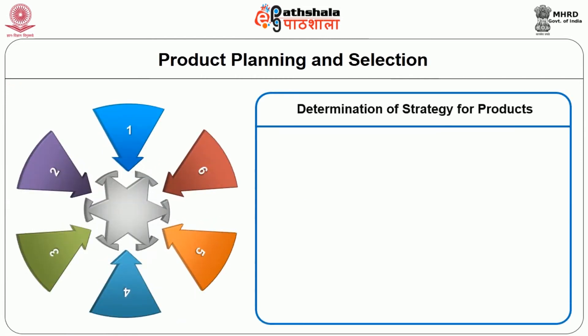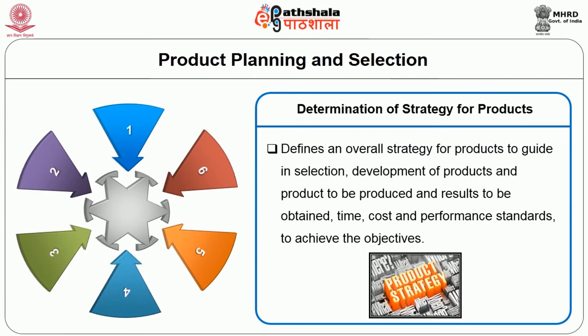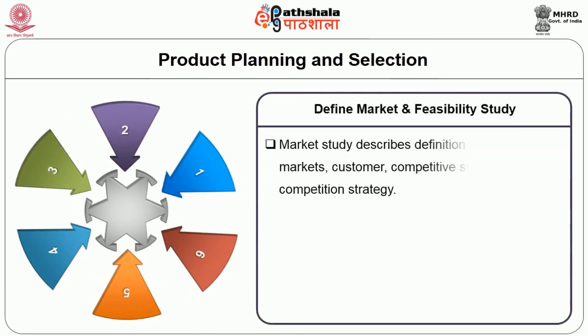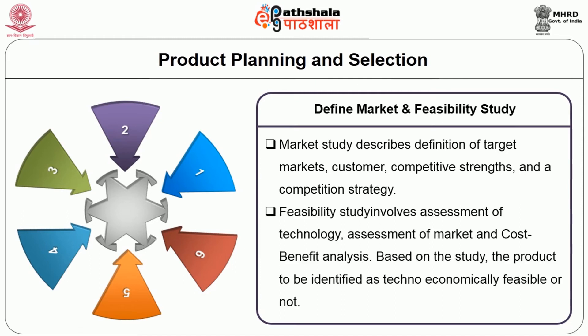Product planning and selection — the fundamental steps. Determination of strategy for products: it defines an overall strategy for products to guide in selection and development of products to be produced, and results to be obtained — time, cost, and performance standards to achieve the objectives. Define market strategy and feasibility study: the market study describes the definition of target market, customer, competitive strength, and competitive strategy. The feasibility study involves assessment of technology, assessment of market, and cost-benefit analysis. Based on the study, the product is identified as economically feasible or not.